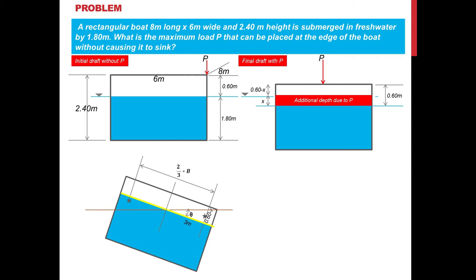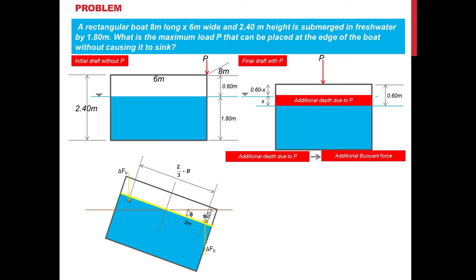The additional depth due to P corresponds to additional buoyant force. P equals the formula of buoyant force: delta gamma fluid times the submerged volume. Because of P, there will be additional depth submerged, and a volume submerged corresponds to additional buoyant force. So P equals gamma fluid times the volume submerged, focusing on the additional depth X.